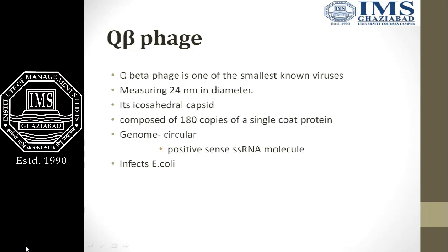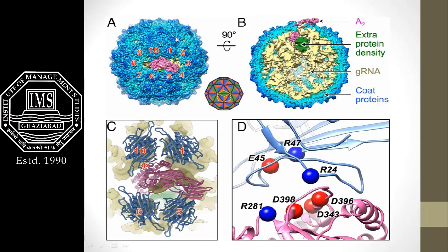Another RNA phage is Q-beta. Q-beta is one of the smallest known viruses, measuring around 24 nanometers in diameter. It also has an icosahedral capsid composed of 180 copies of a single coat protein. Its genome is a circular positive-sense single-stranded RNA molecule, and it also infects E. coli. It contains an A2 extra protein with genomic RNA inside.